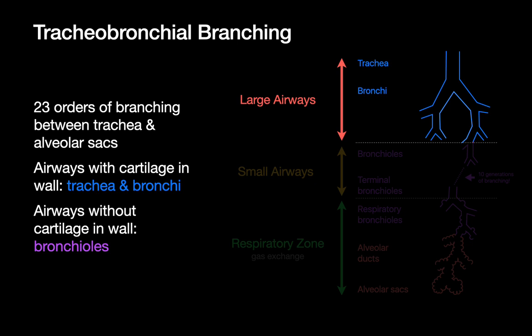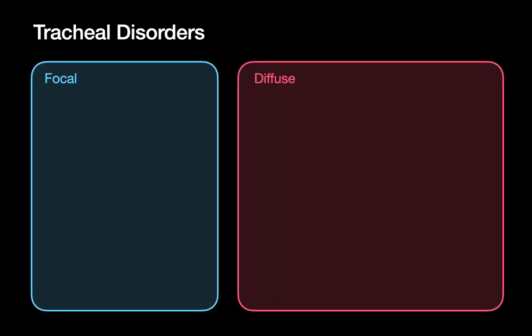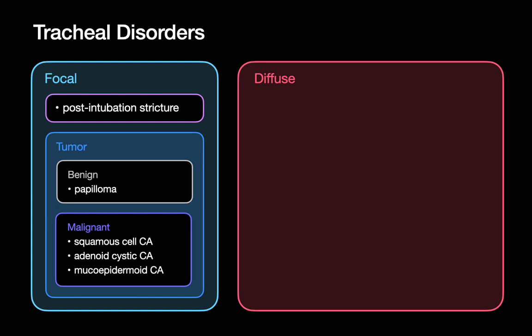For this talk, we'll focus mostly on the large airways, spending time discussing tracheal disorders and then one primary bronchial disorder: bronchiectasis. Tracheal disorders can be fundamentally divided into two major groups, both conceptually and diagnostically when interpreting medical imaging: focal disorders involving a focal segment of the trachea versus diffuse tracheal disorders involving the entire trachea. For focal tracheal disorders, I usually think of two main categories: post-intubation strictures and tracheal tumors, both benign and malignant.